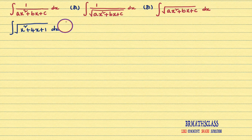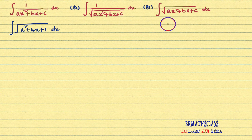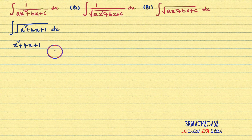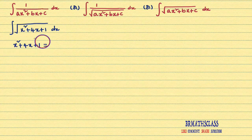If the given problem is any one of these three forms, the procedure is same. What is that procedure? We will consider the expression ax² + bx + c. Here, that expression is x² + 4x + 1. Now, after considering the expression ax² + bx + c, you check whether the x² coefficient is 1 or not.